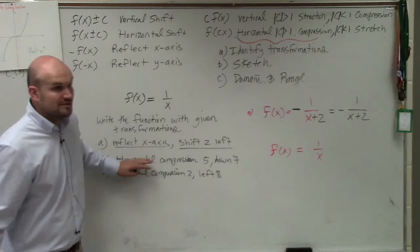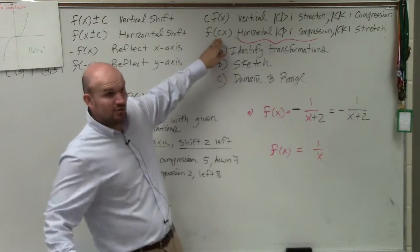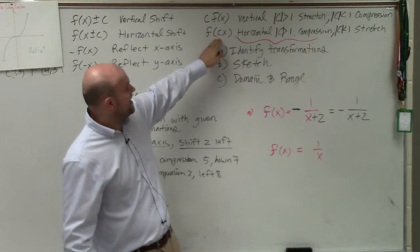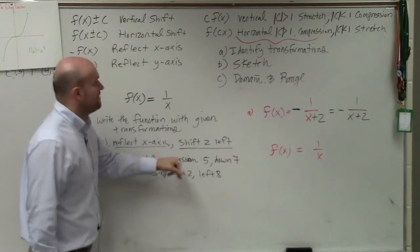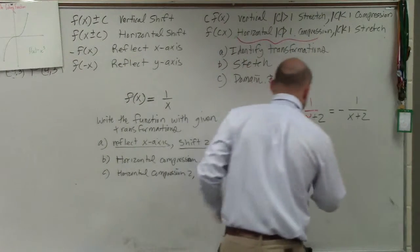So we have a horizontal compression. That means I'm multiplying by a number inside the function. Anything horizontal, I know it's inside. Then it's a compression of 5, so I know it's compression. Therefore, it just means I'm multiplying by 5 inside the function.